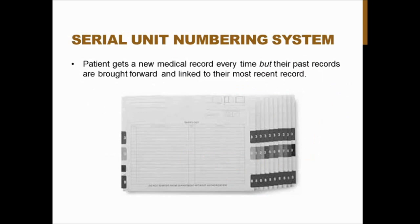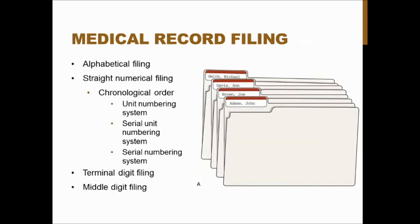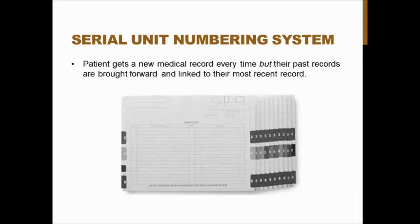The serial unit numbering system is where a patient gets a new medical record number every time they're seen, but their past records are also brought forward and linked with their most recent record, which is really helpful. However, with both serial unit and serial numbering — which are part of straight numerical filing — records are filed by the patient's medical record number, which can be a privacy concern as those numbers could be displayed in an open filing system.